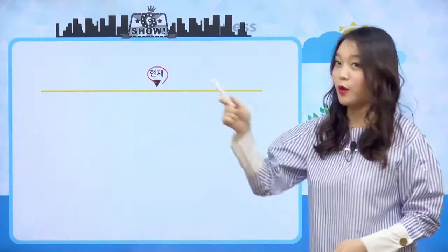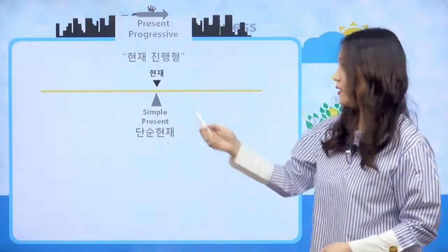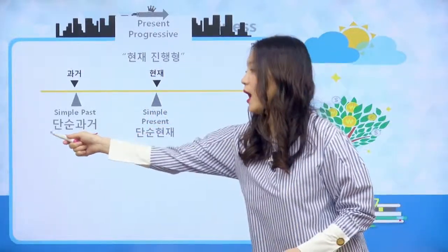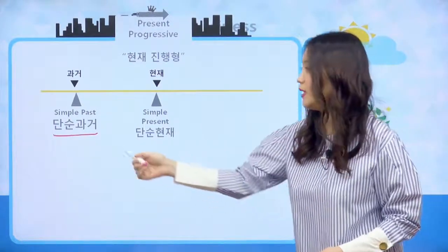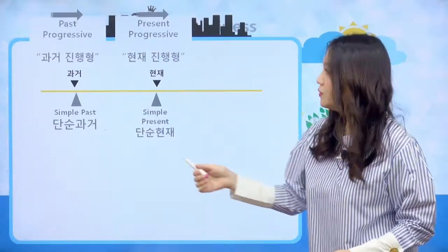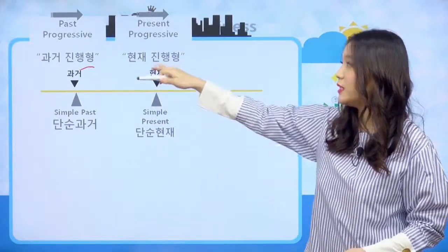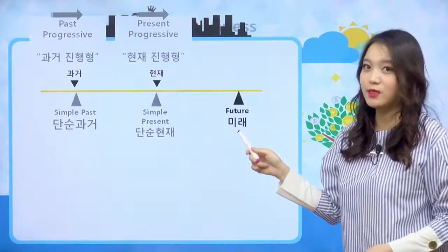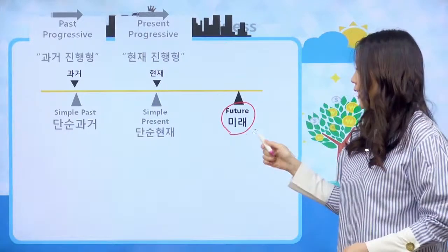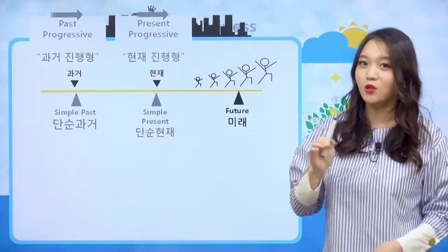우리 맨 처음에 현재 시제에 대해서 배웠어요. 현재에는 단순 현재가 있었고, 어떤 것들이 진행되는 것을 나타내 주는 현재 진행형이 있었어요. 그리고 과거에도 마찬가지로 단순 과거, 과거에 어떤 일이 진행되고 있었음을 나타내 주는 과거 진행형 또한 있었습니다. 시제는 단순 시제와 진행형, 이렇게 두 가지씩 있었는데 미래도 마찬가지예요.